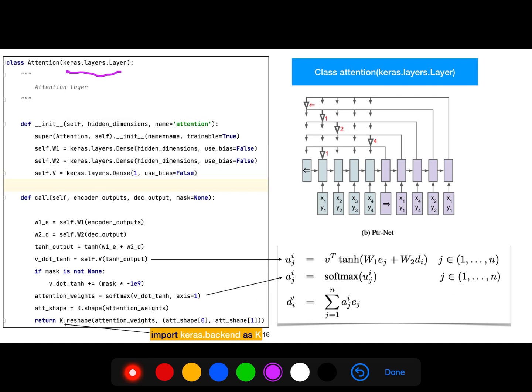The initialization is standard - you want to know the weights. In the call, we have w1_e, w2_e, and this is implemented here. We add them and then we give it to tangent hyperbolic - tanh is here, we give it to tanh, and after that you give it to softmax. Here is the softmax and the dot product with v is here.